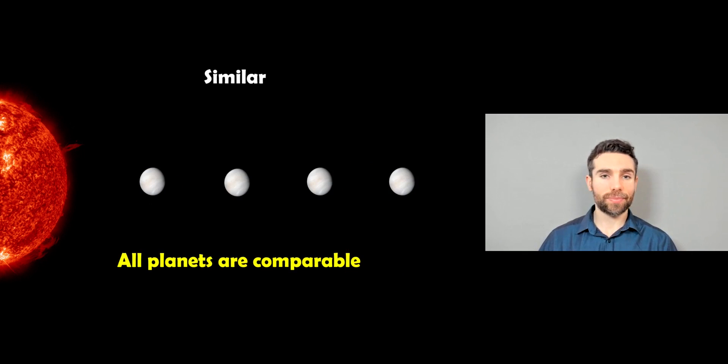And then the final one is similar. So in this sort of system, all of the planets would be somewhat comparable, so there wouldn't really be an increase in mass as you moved away from the star, they wouldn't decrease in mass, and they wouldn't really be random. So they'd be fairly similar in size, composition, as you got from the star.